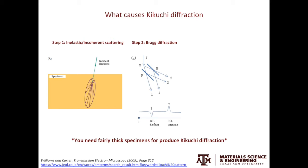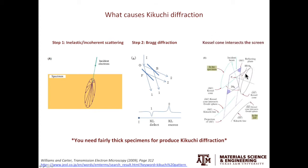Due to the inelastic scattering nature from the first step, the electron beams are now coming from all different directions for the Bragg diffraction. Electrons coming from different directions, as long as the incoming angle is θB, the Bragg angle, will strongly diffract. Therefore, in 3D, we are forming something called Kossel cones. The intersection of the Kossel cones with the viewing screen produces the Kikuchi lines. In regular diffraction, because the incident electron beam has only one direction, we see spots. In Kikuchi diffraction, due to the inelastic scattering first step, the incident electron beam comes in all different directions, which gives rise to the lines.